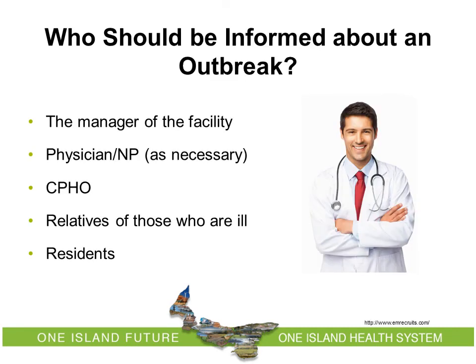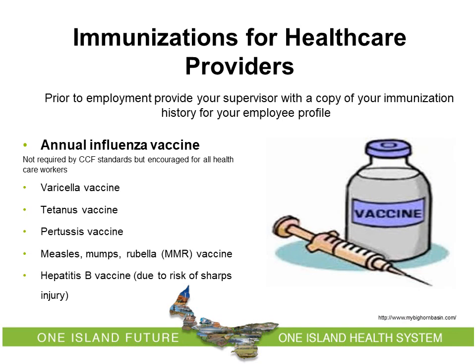Who should be informed about an outbreak? As soon as staff believe an outbreak is occurring, it is important to inform the manager of the facility, the facility physician, the Chief of Public Health Office, relatives of those who are ill, and the residents. Immunizations for healthcare providers: Prior to employment, provide your supervisor with a copy of your immunization history for your employee profile. Appropriate immunizations protect both staff and residents.